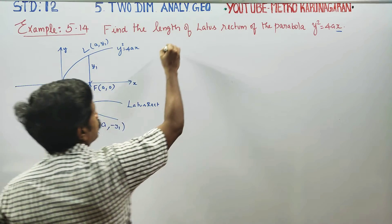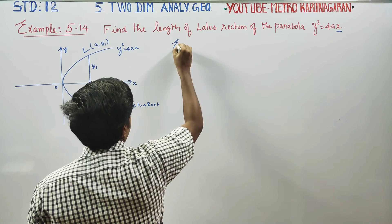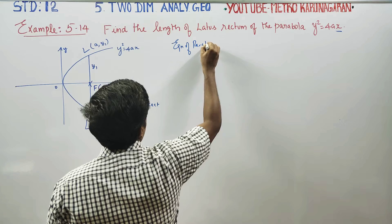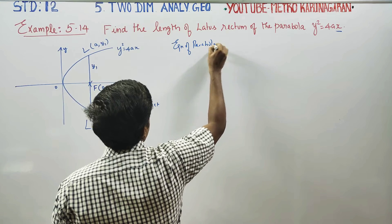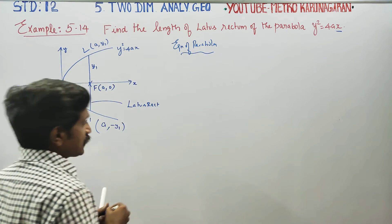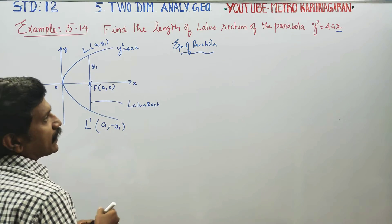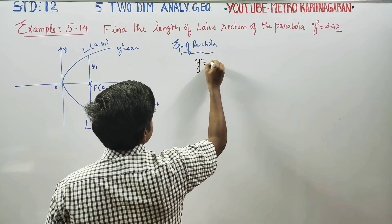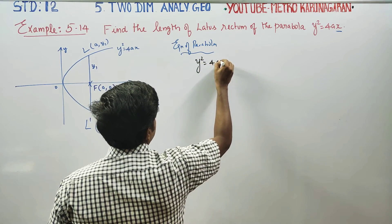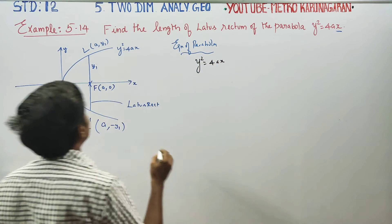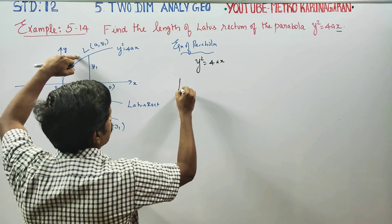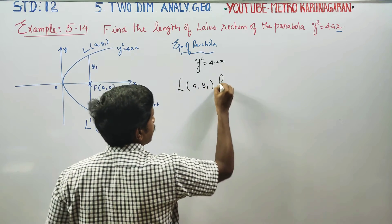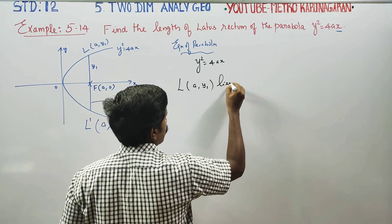The equation of the parabola is y² = 4ax. The point L(a, y1) lies on the parabola.